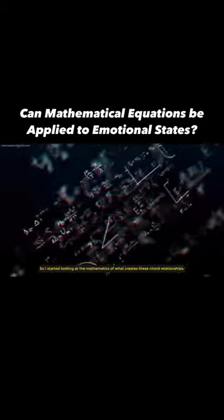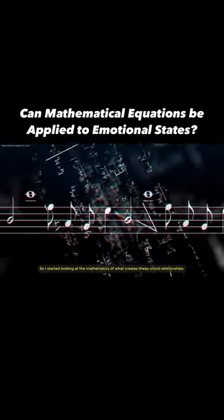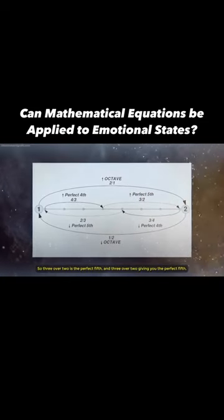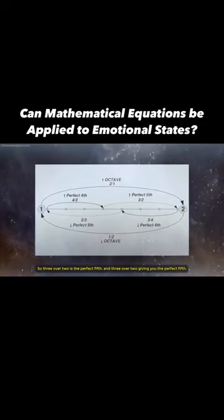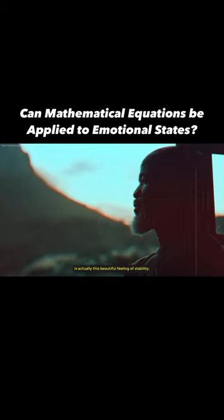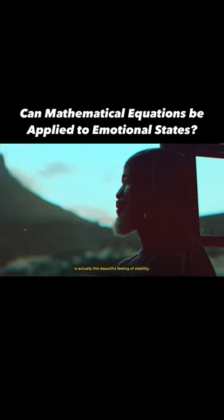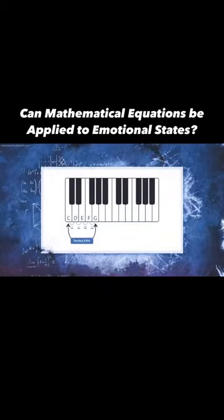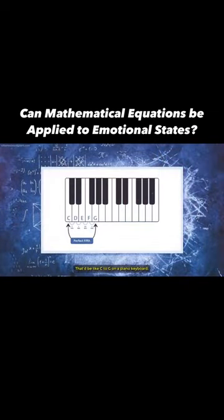I started looking at the mathematics of what creates these chord relationships. The mathematics is mathematical intervals. 3 over 2 is the perfect fifth. And 3 over 2, giving you the perfect fifth, is actually this beautiful feeling of stability—it makes you feel safe. It's a major chord. That'd be like C to G on a piano keyboard.